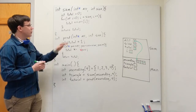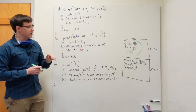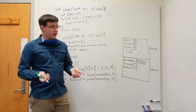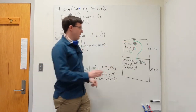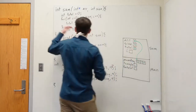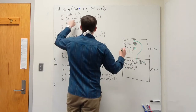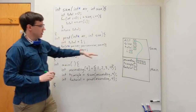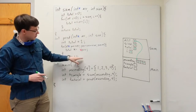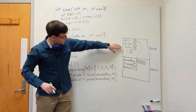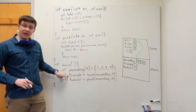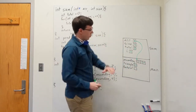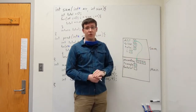Similarly, on the iterations of the loop where i equals 2 and i equals 3, we access the next two buckets of the array in main and add those values to the total, so we get 6 and then 10. When we get to the bottom of the loop, i gets incremented to 4 and is no longer less than size, so we leave the loop and return total. When the sum function returns, it evaluates to the return value of 10, which gets assigned into our variable triangle, and we remove the stack frame for the function that has now returned.